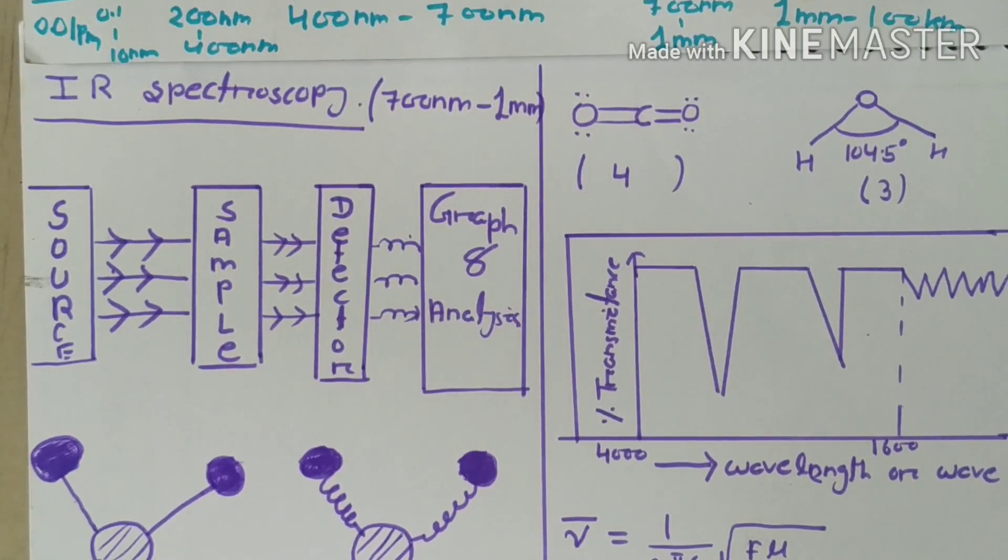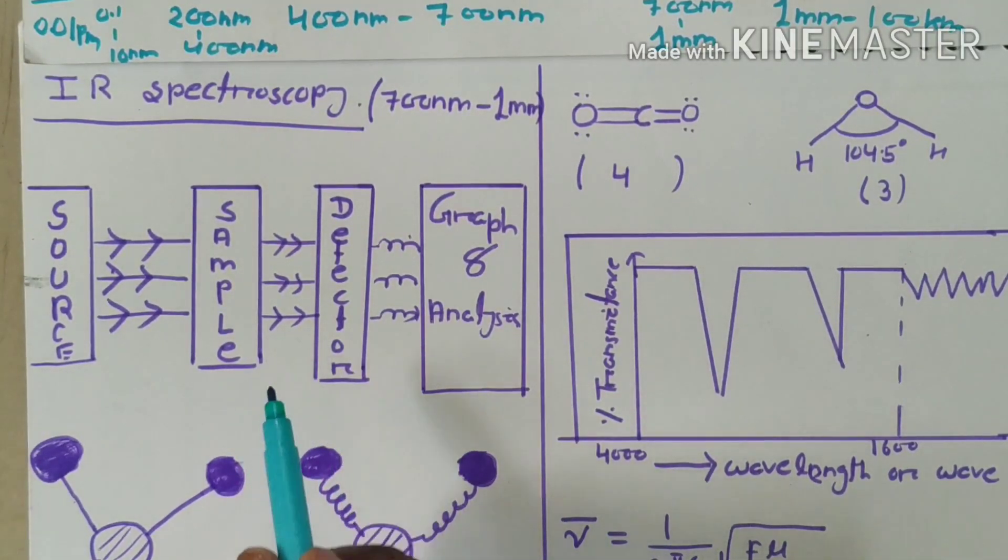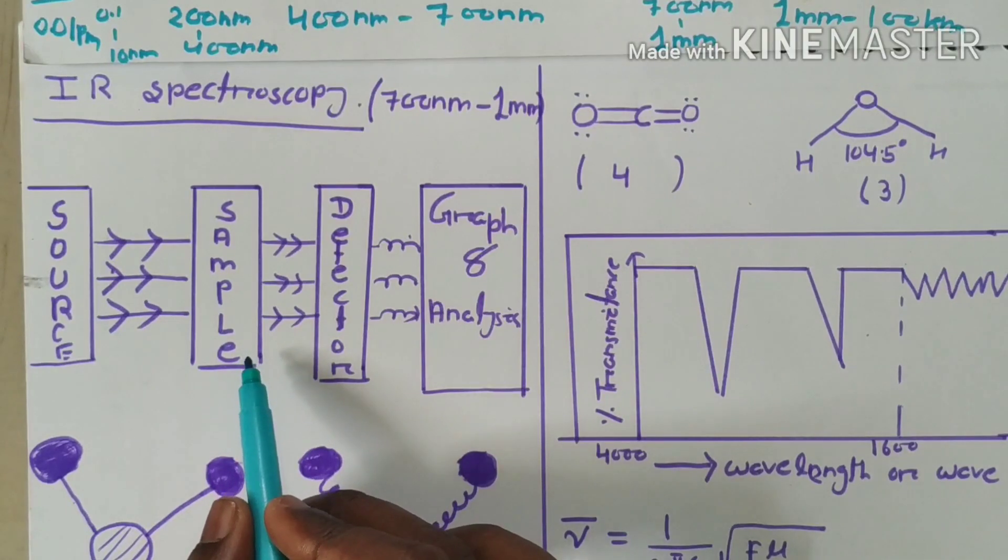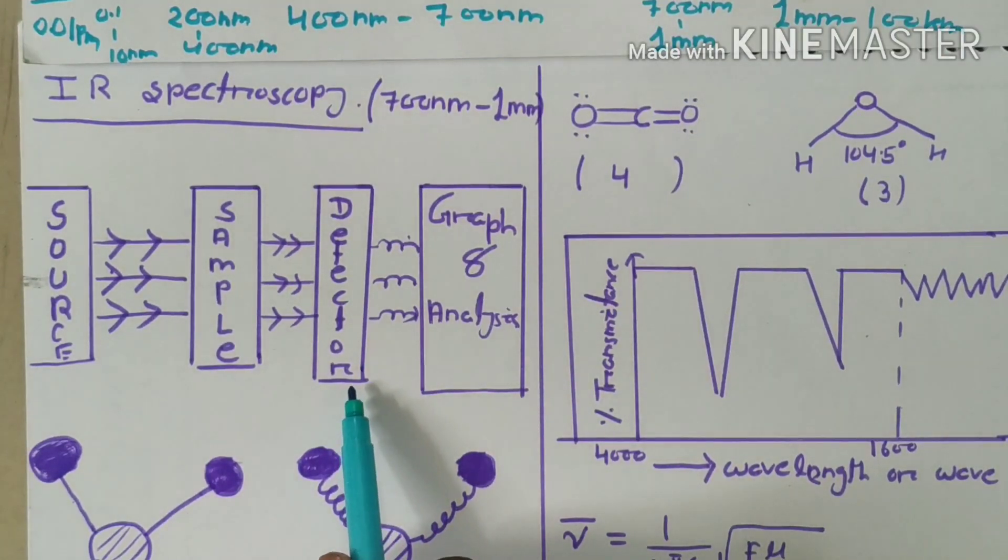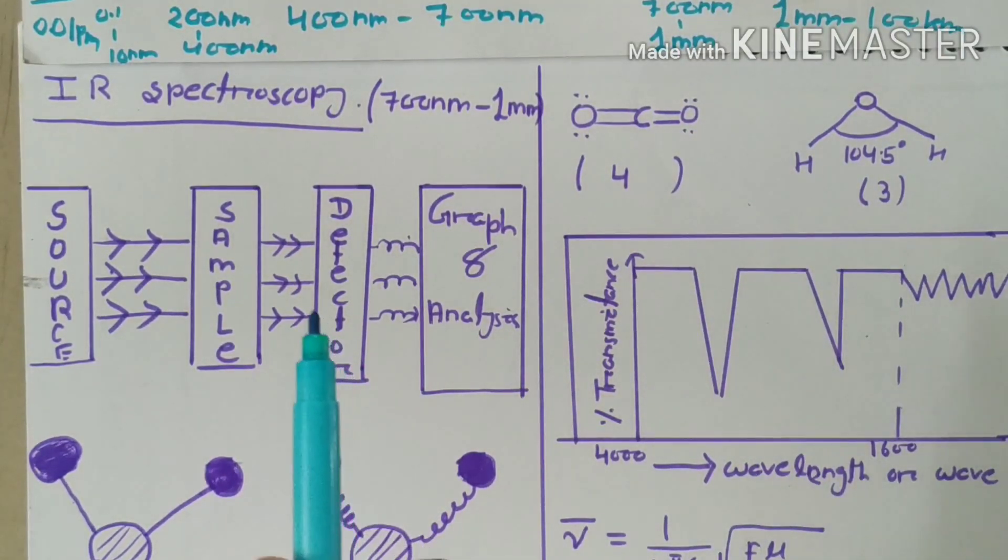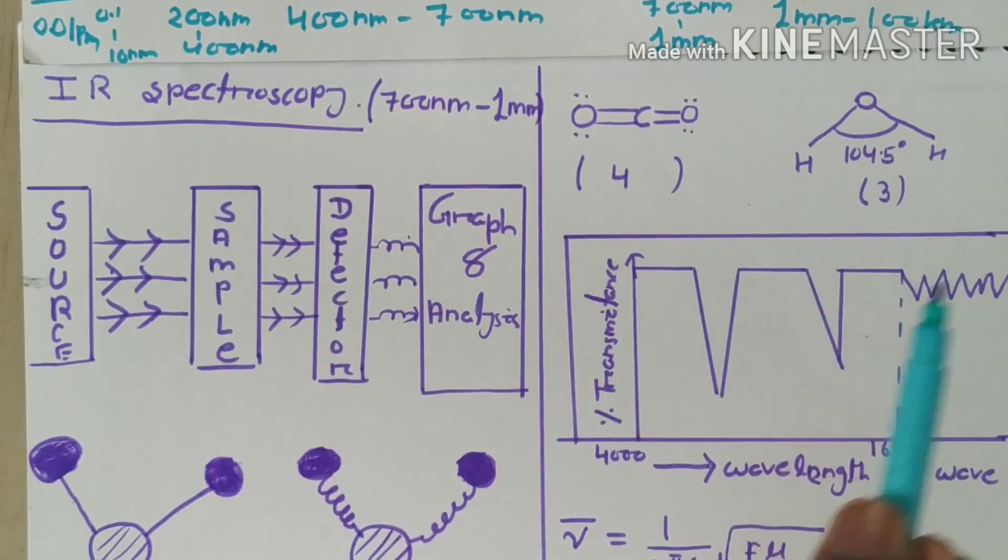The rays fall through the sample and the sample absorbs some of the IR rays. There is a detector which detects the absorbance and transmitted light from the sample.